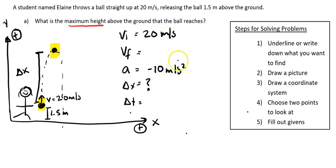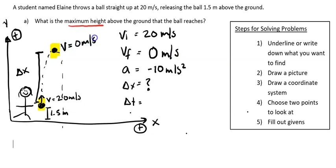I need to know one more thing to solve this. The one fun thing is: my final velocity is going to be 0 meters per second. Whenever something reaches its highest point in free fall — that's the point right before it turns around and goes back down — the velocity is 0 meters per second. So I have enough information.